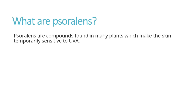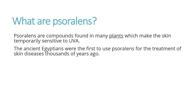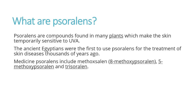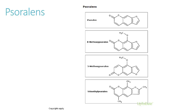Psoralens are compounds found in many plants which make the skin temporarily sensitive to ultraviolet A radiation. The ancient Egyptians were the first to use psoralens for the treatment of skin diseases, thousands of years ago. Medicinal psoralens include methoxypsoralen compounds: 8-methoxypsoralen, 5-methoxypsoralen, and trimethylpsoralen.